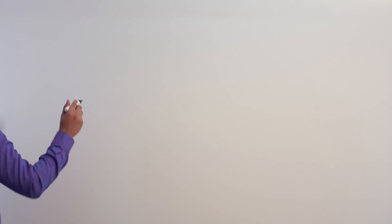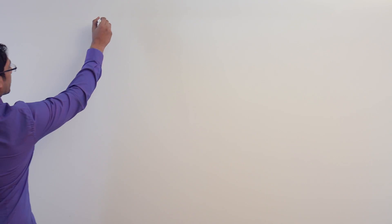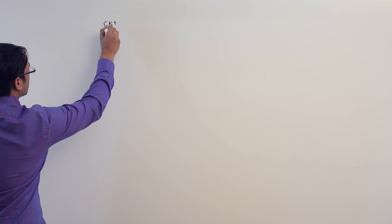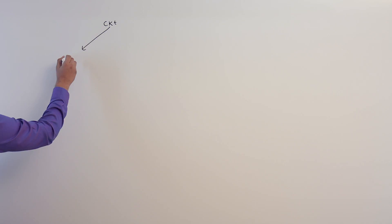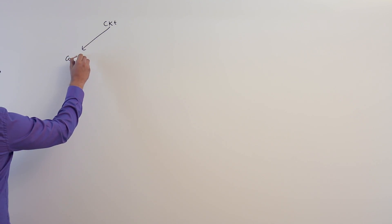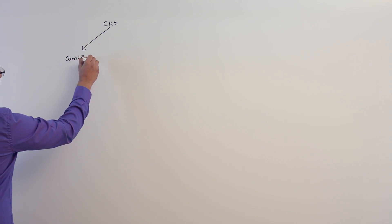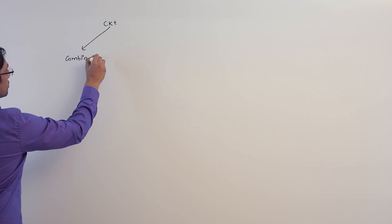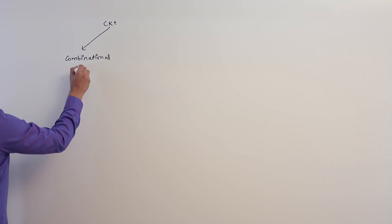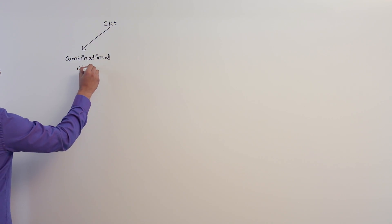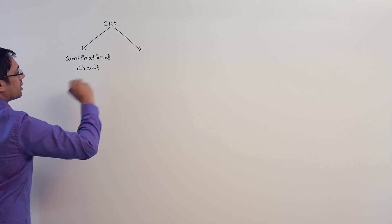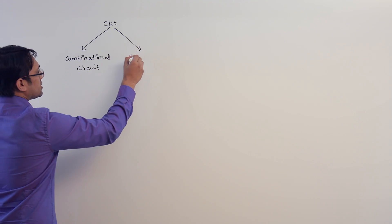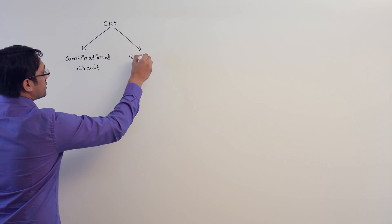Before we start combinational circuits, let me tell you that the circuits we are going to make are of two types: number one are combinational circuits, and the second type are called sequential circuits.